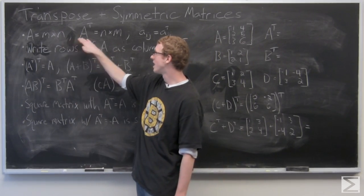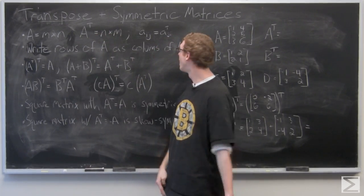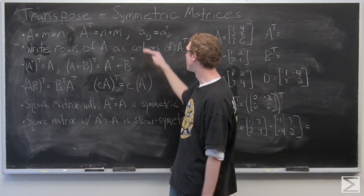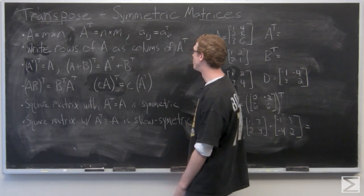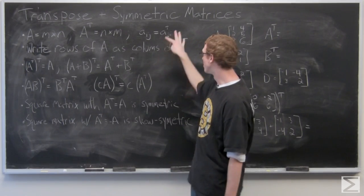In an M by N matrix, A T is going to be N by M, where you have the entries of A as A I J are equal to the A J I entries of the transpose.